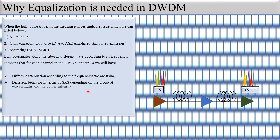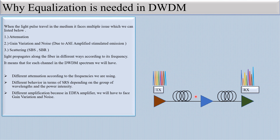Each wavelength has different attenuation, different behavior in terms of SRS depending on the group of wavelengths and the power intensity, and different amplification. In an EDFA amplifier, the amplifier does not behave the same for all wavelengths — its behavior is different for different wavelengths. That's why we face gain variation and noise. Gain variation means the gain for each wavelength is not the same; the same amplifier causes different gain for different wavelengths.